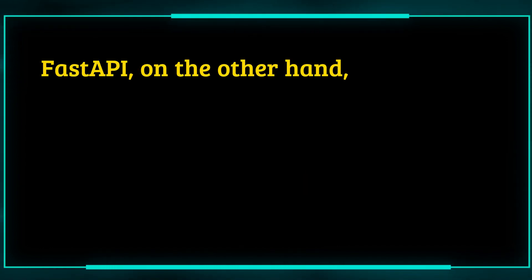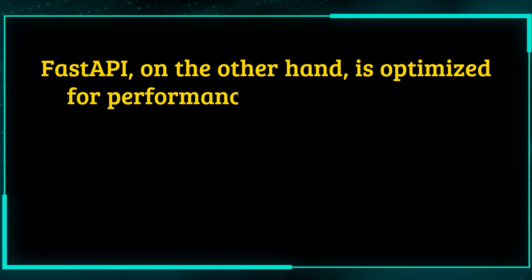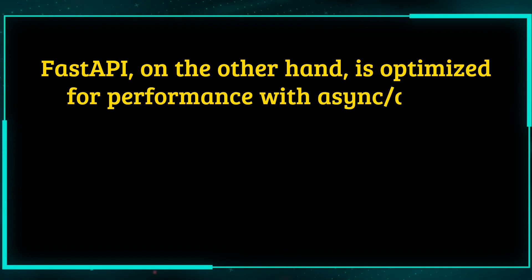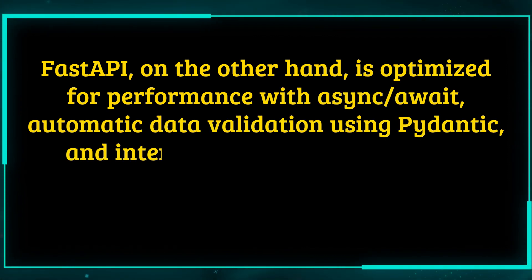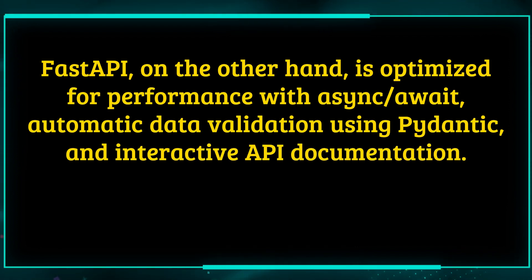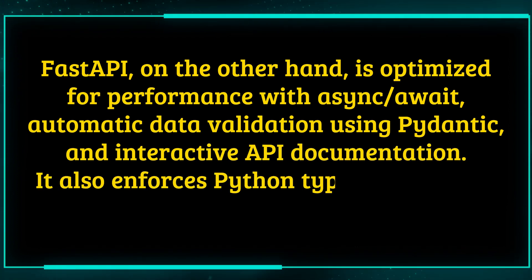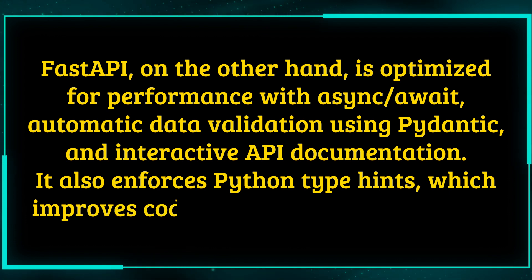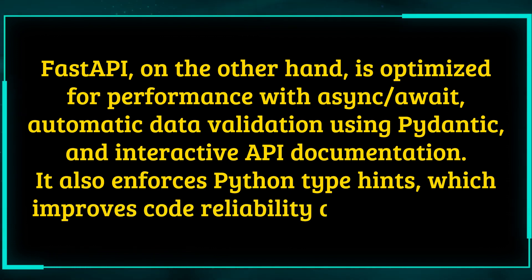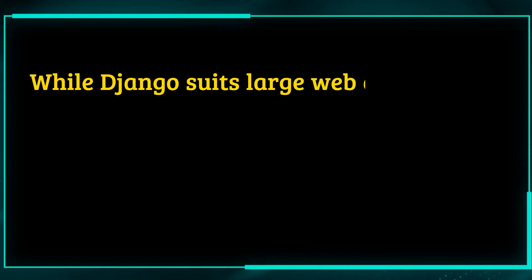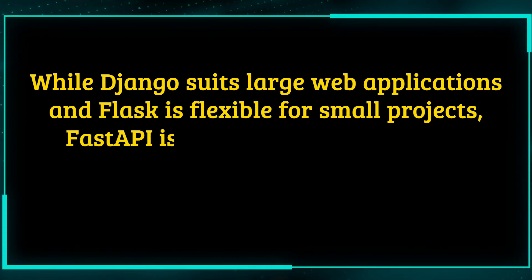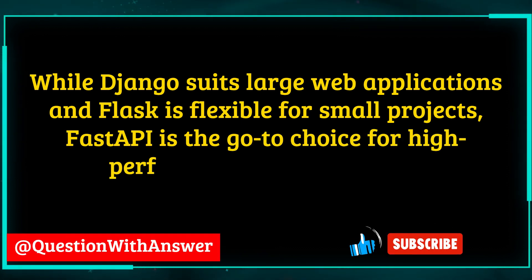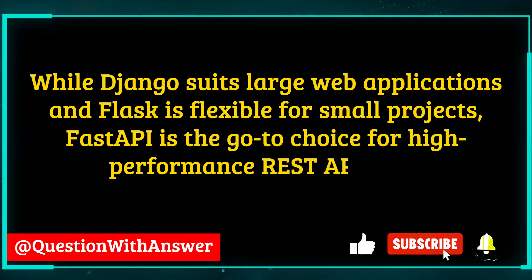FastAPI, on the other hand, is optimized for performance with async/await, automatic data validation using Pydantic, and interactive API documentation. It also enforces Python type hints, which improves code reliability and readability. While Django suits large web applications and Flask is flexible for small projects, FastAPI is the go-to choice for high-performance REST APIs and microservices.